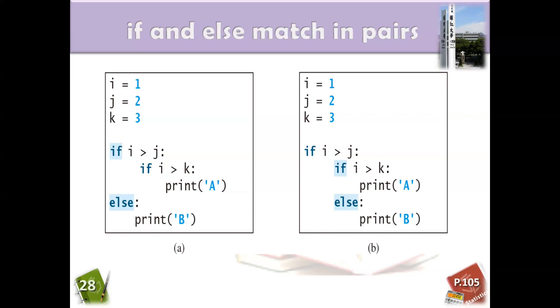So then, they will let you see what's the differences. The pair, you have to pay attention. The else, you have to align which if you want to be paired. So it's in pairs. When the position's different, the result will be totally different. Okay.